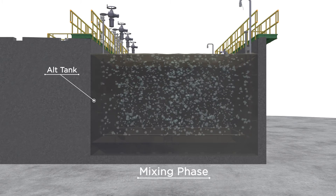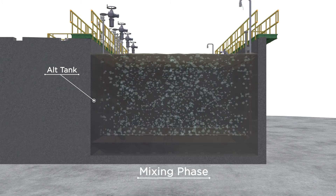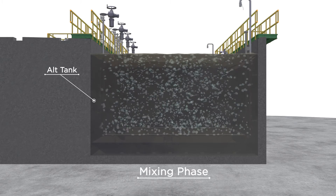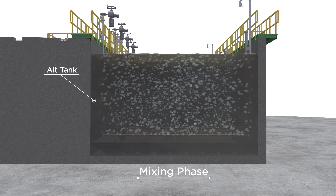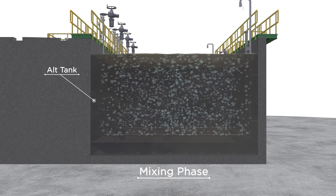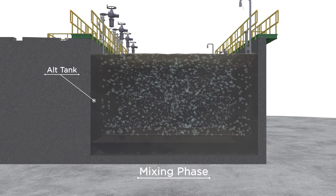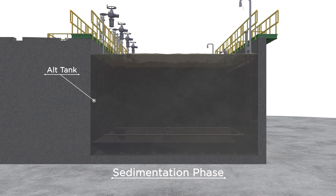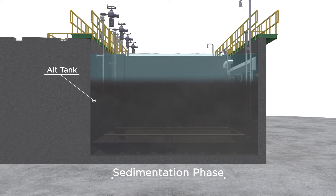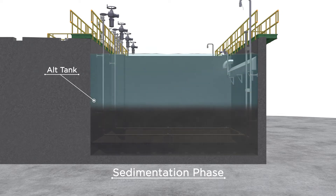During the mix phase, the Alt Tanks are mixed by a roll current induced by coarse bubble aeration for a few minutes. High mixing intensity homogenizes and re-aerates the anoxic sludge blanket. Upon entering the sedimentation phase, the settling sludge blanket promotes the formation of a floc filter and allows fine particle removal and the development of a dense bottom sludge layer.